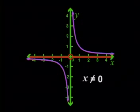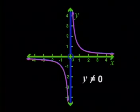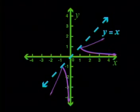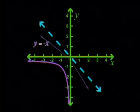Yes. And likewise, the graph can have all y values except y equal to zero. We also found that this graph has two lines of symmetry. The lines are the y equals x line and the y equals negative x line.